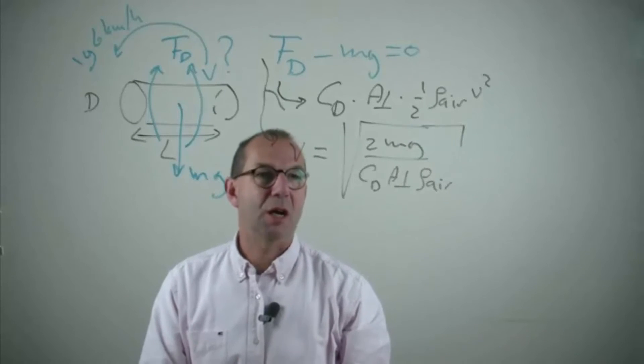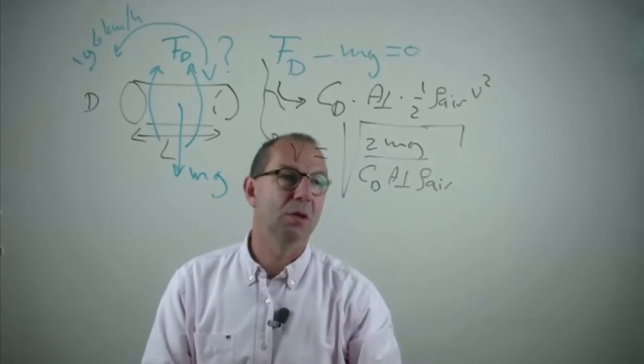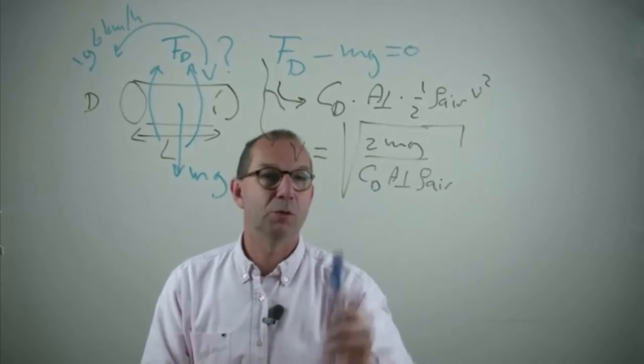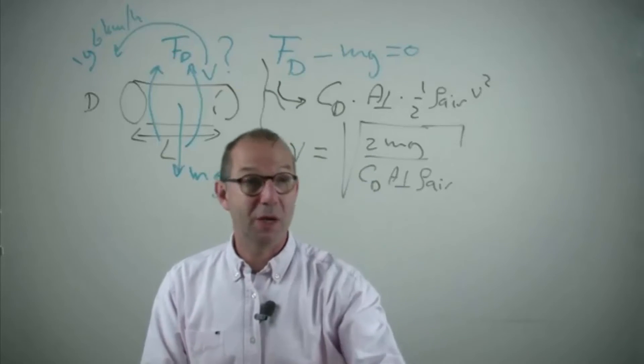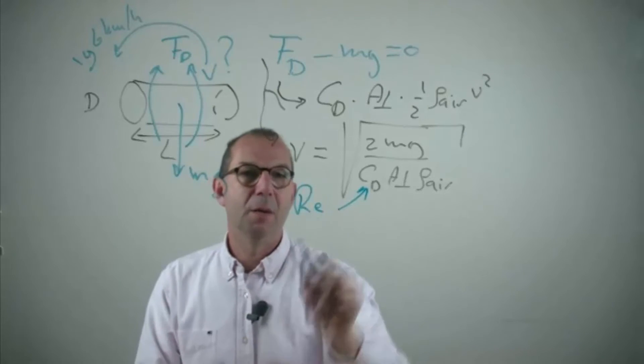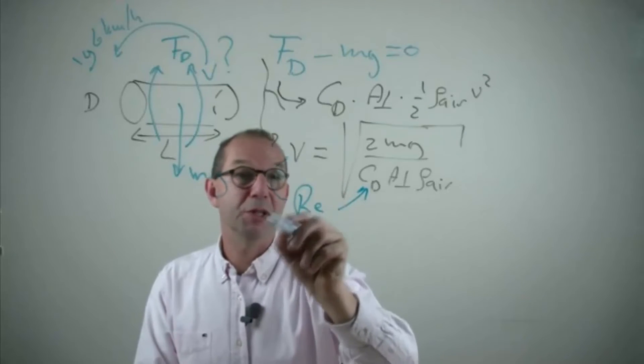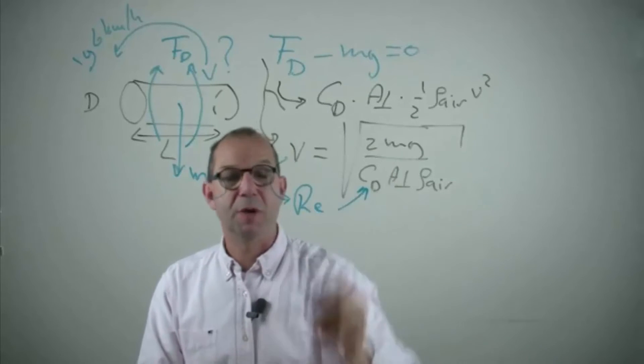And here we're kind of stuck. We cannot compute the velocity because we don't know the drag coefficient. To find the drag coefficient, we need to look up the drag coefficient, which is a function of the Reynolds number. But we don't know the Reynolds number if we don't know what the velocity is. So this circles around.